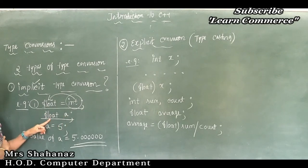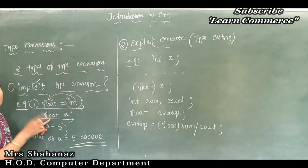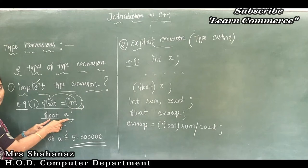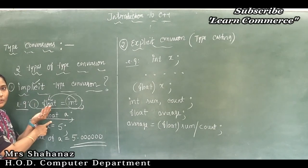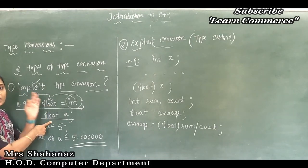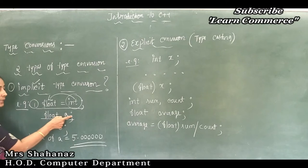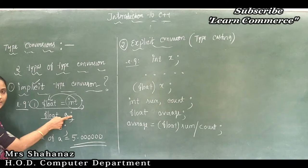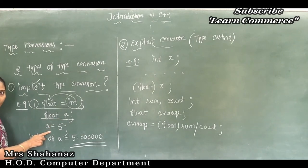I declare: float a; — one variable declared using the data type float, terminated by a semicolon. Then I assign a value to the variable: a = 5. The statement is terminated using a semicolon.